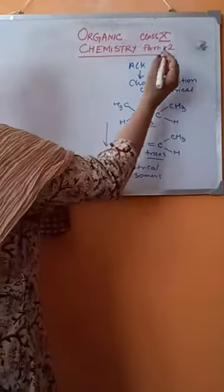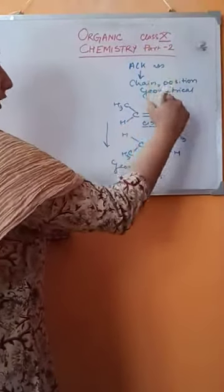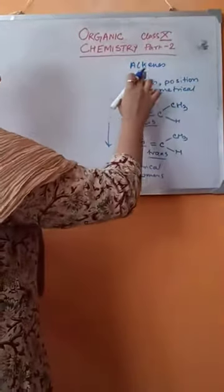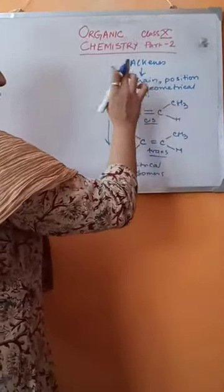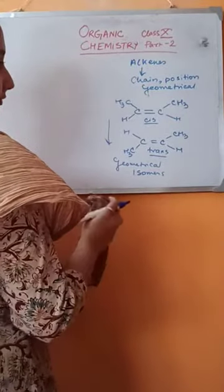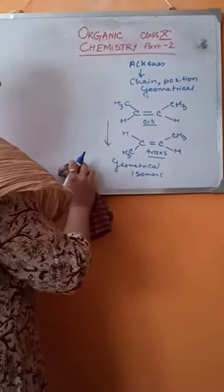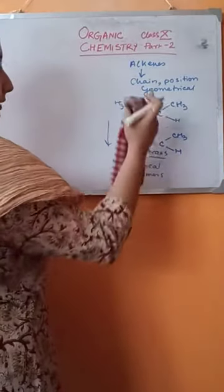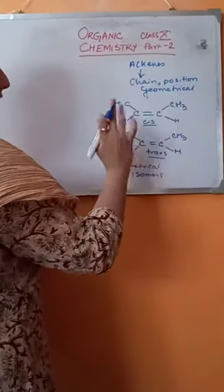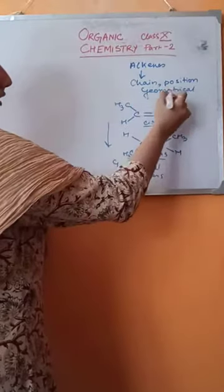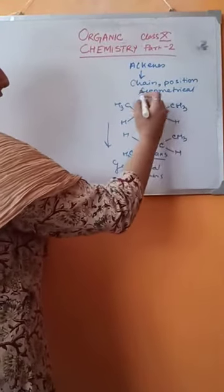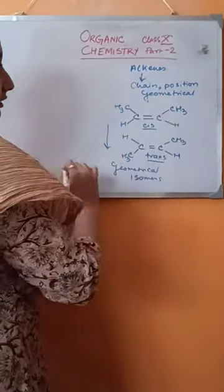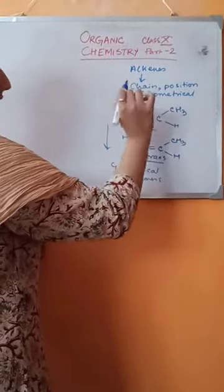One correction: I was just talking about alkenes, not alkanes. Please note that the heading should be alkenes — chain isomerism, position isomerism, and geometrical isomerism all happen for alkenes, not alkanes.